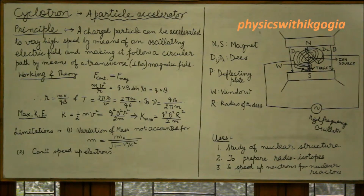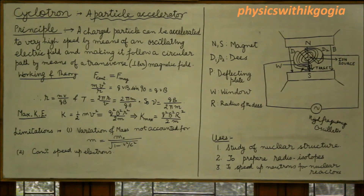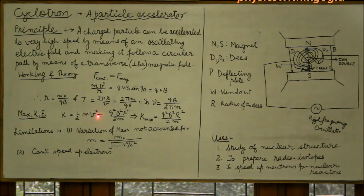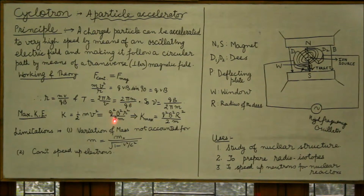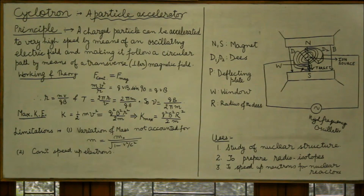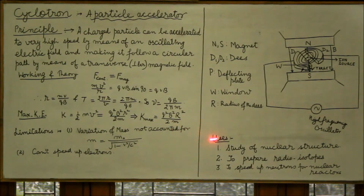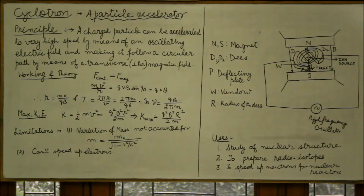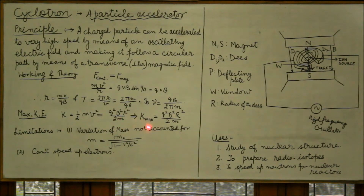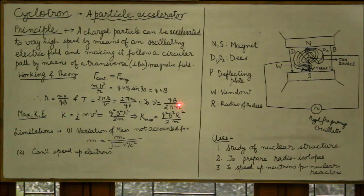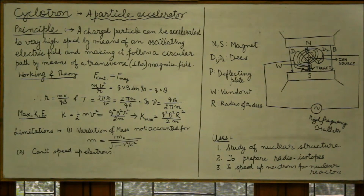The kinetic energy gained by the particle is ½mv². Substituting v = qRB/m, we get the kinetic energy as q²r²B²/2m. The maximum kinetic energy which the cyclotron can impart to a particle depends on r, since the other factors are constants. The maximum value of r is capital R, the radius of the Ds. Therefore the expression for maximum kinetic energy is q²B²R²/2m.